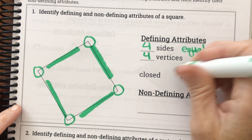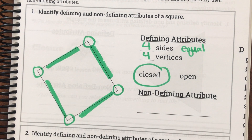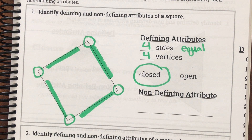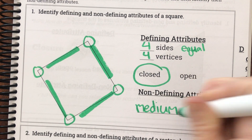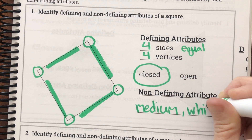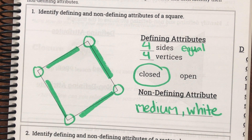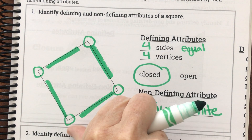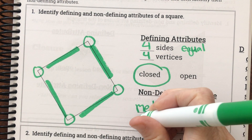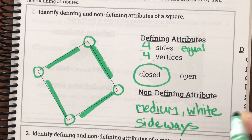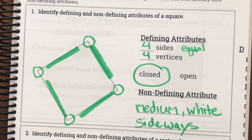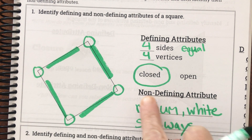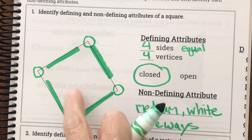And is it a closed or open shape? It's closed — there are no open spots. Now for non-defining attributes: for size we could say it's medium. For color we could say it's white. And for orientation — did they put it straight or is it tilted? It's on its side, so we could say sideways. That's its size, its color, and its orientation — and none of those help us figure out the name of the shape, so they're non-defining.